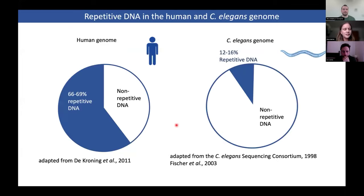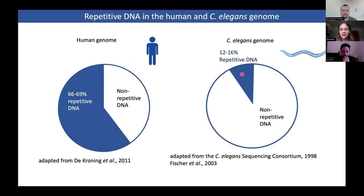Repetitive DNA makes up a huge percentage of our genome. It is estimated that 66 to 69% of the human genome is repetitive DNA. In the worm C. elegans, the amount of repetitive DNA is much smaller — it is only 12 to 16%.